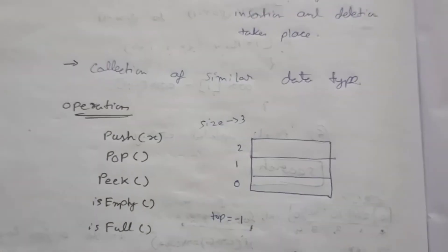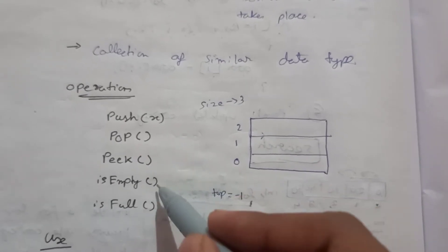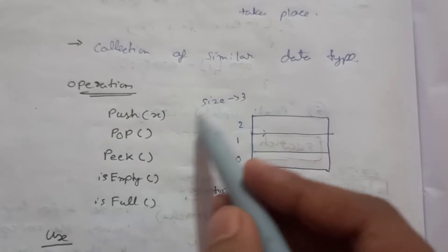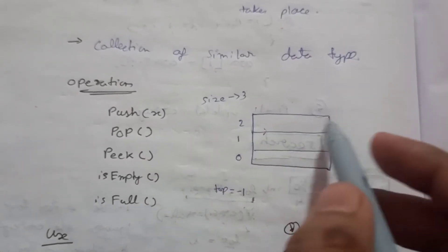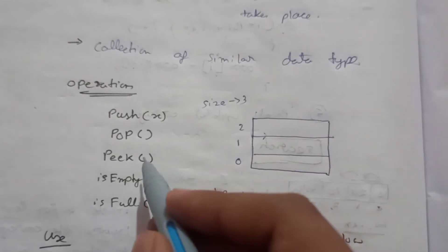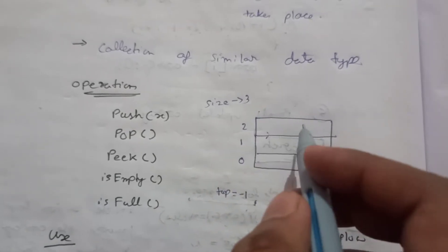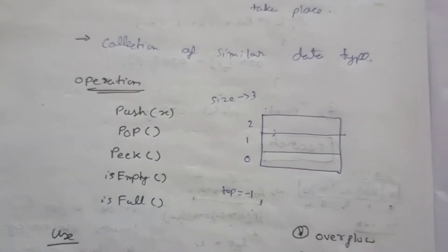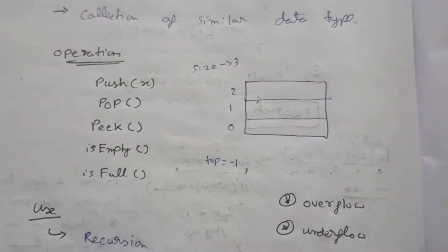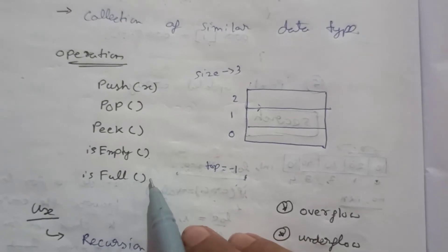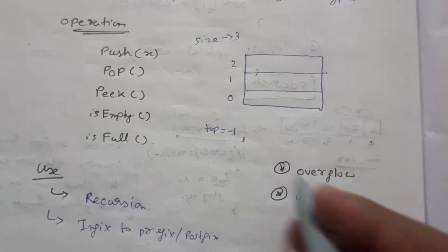Stack is a collection of similar data types. The possible operations are: push, pop, peek, isEmpty, and isFull. Push inserts one value inside the stack. Pop deletes one value from the top of the stack. Peek shows the value at the top. isEmpty returns true if the stack is empty, otherwise false. isFull returns true if the stack is full.